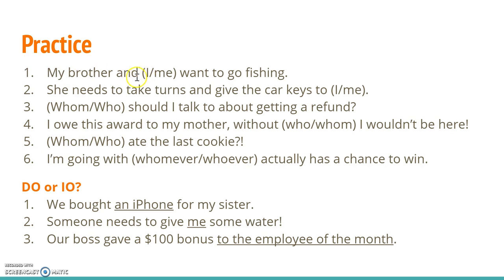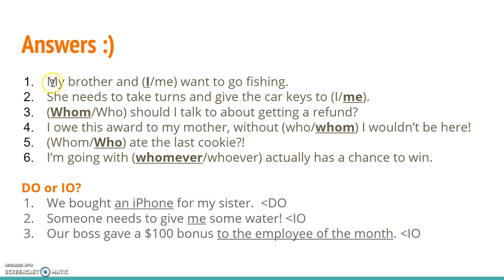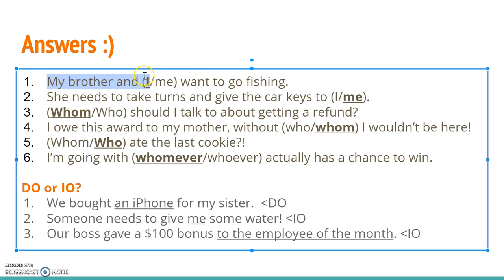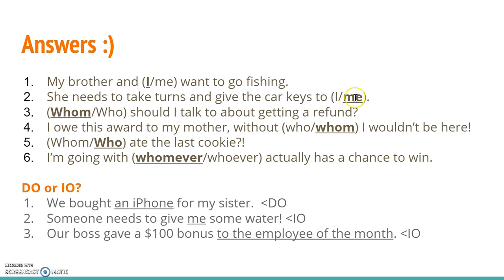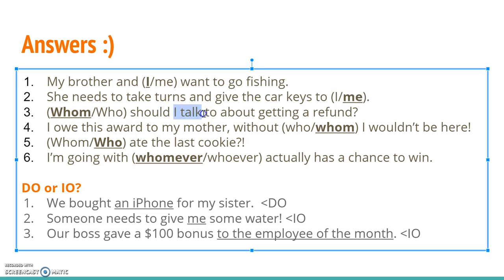In this practice, try to figure out which pronoun you need, and tell me if the underlined word is a direct or indirect object. Let's check out the answers. 'My brother and I want to go fishing' — here's a compound subject, and since we're in subject mode, I'm going to use the subject pronoun I instead of the object pronoun me. 'She needs to take turns and give the car keys to me' — she's the subject doing the giving, and I'm just going to receive the car keys, so I say me, an object pronoun. 'Whom should I talk to about getting a refund?' — I'm doing the talking, and I'm trying to figure out to whom I should speak. That word to is another hint that I want whom, an object pronoun. 'I owe this award to my mother — without whom, I wouldn't be here.' I'm the subject; without her is an object.